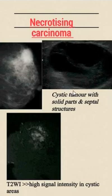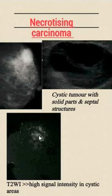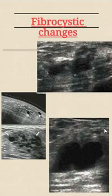Keep in mind that necrotizing carcinoma can have a cystic appearance — it can appear as a cystic tumor with solid parts and septal structures, always in the form of a complex cyst with septations, soft tissue component, and irregular ill-defined peripheral irregularities and skin thickening. On Doppler, there is flow within it. On T1-weighted images, there is high signal intensity in cystic areas. With contrast it will enhance. This is suspicious for carcinoma — perform a biopsy.